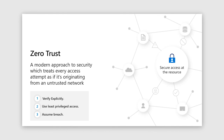The zero trust approach has three guiding principles applied contextually on a digital resource. The first is verifying explicitly — always authenticate and authorize based on all available data points for any sort of interaction. The second is using least privileged access, which involves limiting user access with just-in-time and just-enough access. The third is assuming breach, which involves minimizing the blast radius for breaches and preventing lateral movement through segmentation.